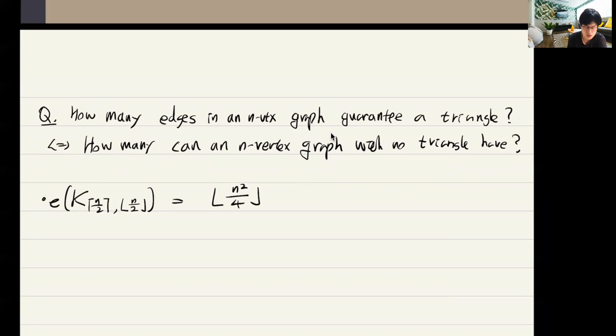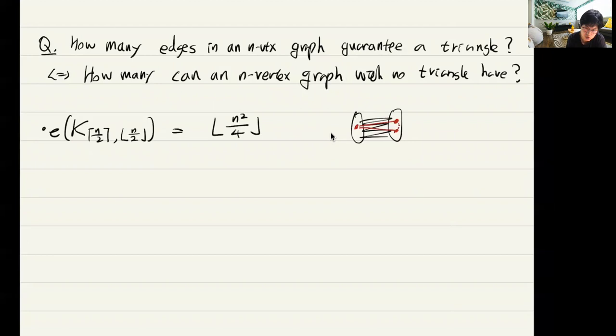In a complete bipartite graph, no matter how you take three vertices, two of them belong to the same part, so you don't have a triangle. Would this be best possible? In other words, if we have one more edge, does it force K₃?